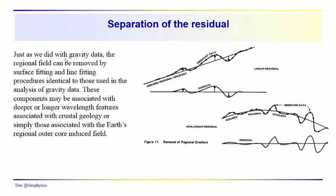Another feature we discussed with gravity was removing the regional field to isolate a residual field. We did that by surface fitting and line fitting to the collected field data. These regional fields may be associated with deeper crustal materials or with the latitude effect. You want to remove the regional component and look only at the relative variations — the residual — which might correspond to the shallower features you're actually interested in. Your regional anomaly could be linear or non-linear; the goal is to remove it to examine those relative variations in magnetic field intensity.